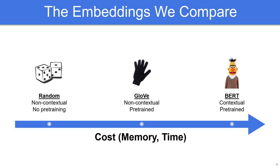These involve no pre-training whatsoever, and are extremely efficient to generate and store, for example by only storing the random seed or by using structured random matrices. Note that using randomness to construct efficient word representations has been considered previously, for example in the recent work on self-governing neural networks by Ravi et al.